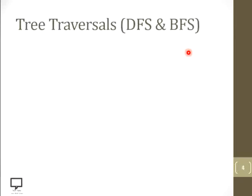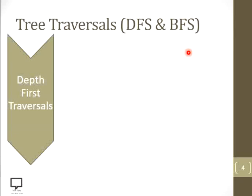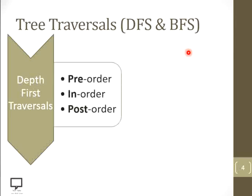Let's focus on tree traversals. There are basically two techniques of tree traversal: DFS, that is Depth First Search, and BFS, which is Breadth First Search. Depth First Search is an algorithm or technique. There are again three sub-techniques: pre-order, in-order, and post-order. These three techniques basically depend on the position of the root node.